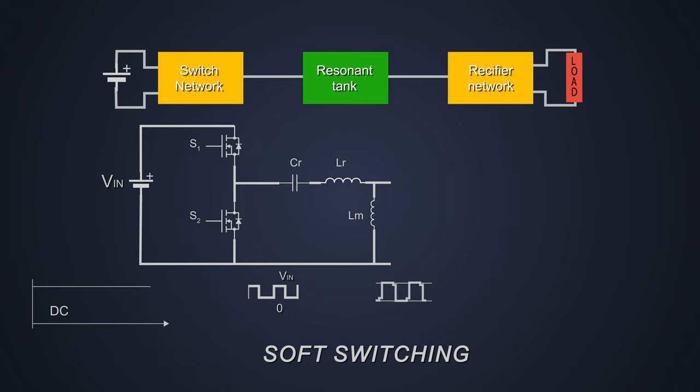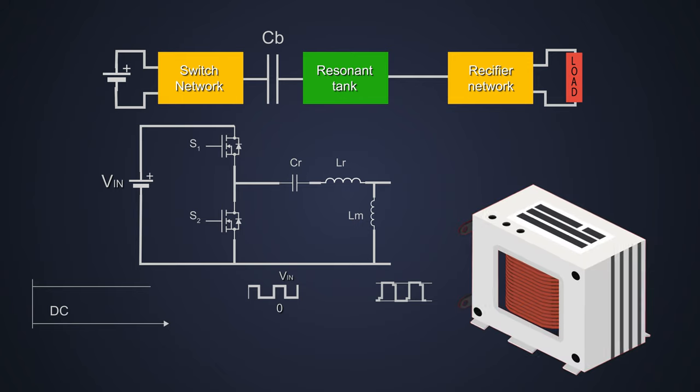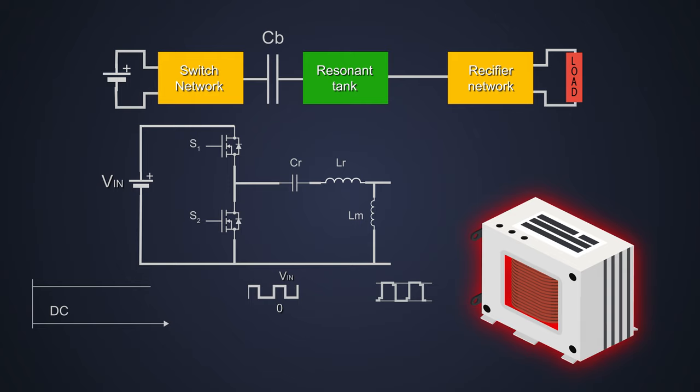What is soft switching? That thing we will see in detail in future videos. In some switching network and rectifier network combinations, we add a DC blocking capacitor to maintain the inductor volt second balance, that is to avoid the saturation of the transformer.